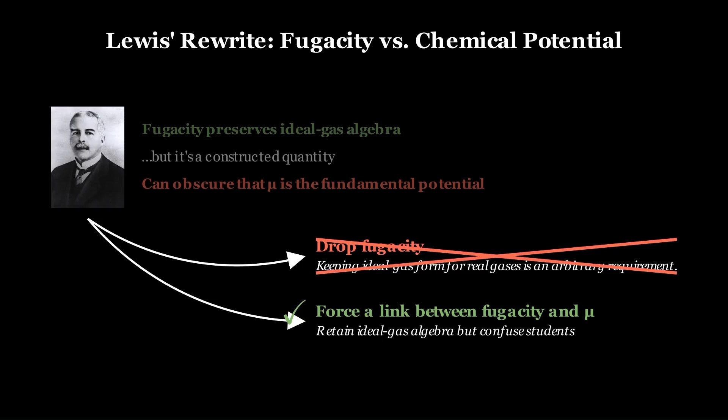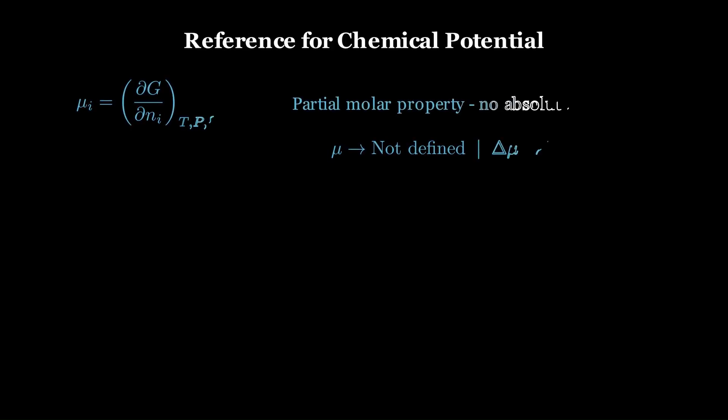To better understand how Lewis linked fugacity to chemical potential, we need to understand how chemical potential changes with pressure, which we will subsequently replace with fugacity. An important point to note is that chemical potential is a partial molar property for a species. Its absolute zero is arbitrary. Only differences between states, whether in pressure, temperature, composition, or phase, have physical meaning.